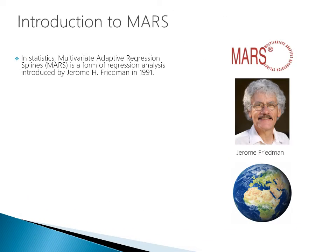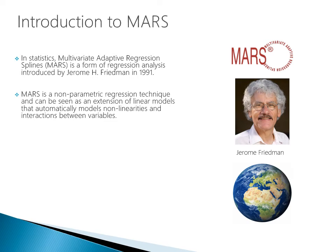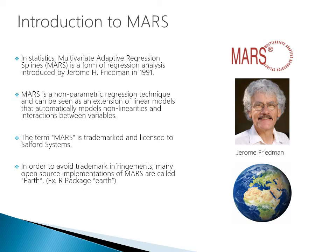In statistics, multivariate adaptive regression splines, or MARS, is a form of regression analysis introduced by Jerome Friedman in 1991. MARS is a nonparametric regression technique and can be seen as an extension of linear models that automatically models nonlinearities and interactions between variables. The term MARS is trademarked and licensed to Salford Systems. In order to avoid trademark infringements, many open source implementations of MARS are called Earth. For the purpose of this lecture, we're going to talk about the technique as multivariate adaptive regression splines, or MARS.